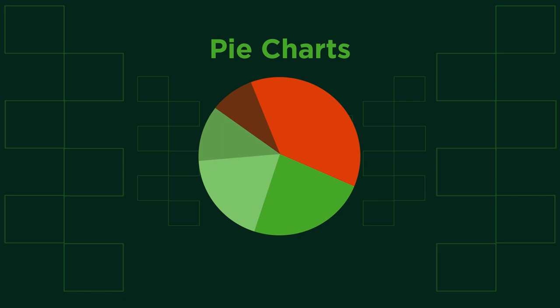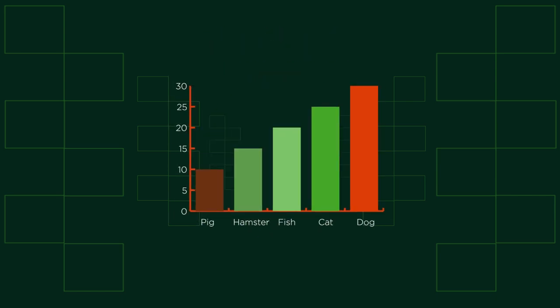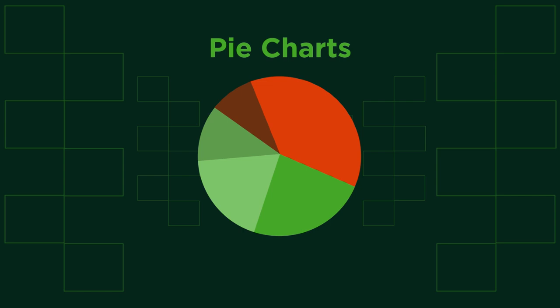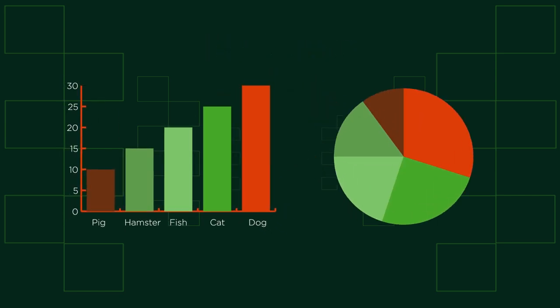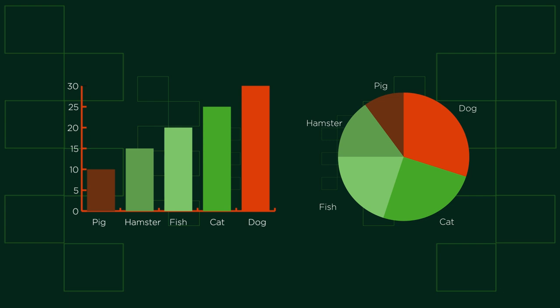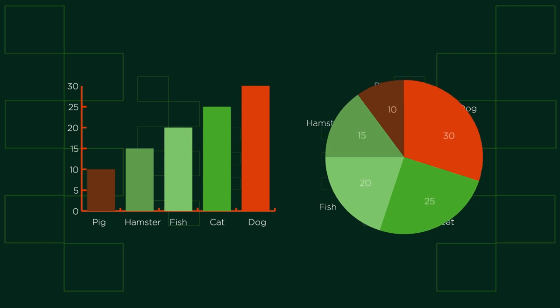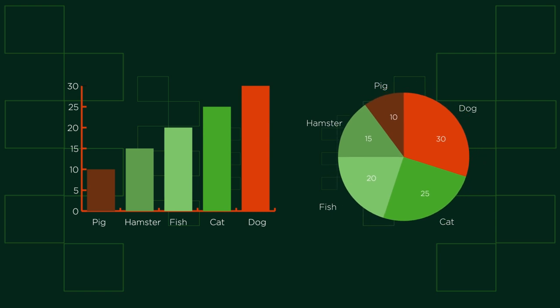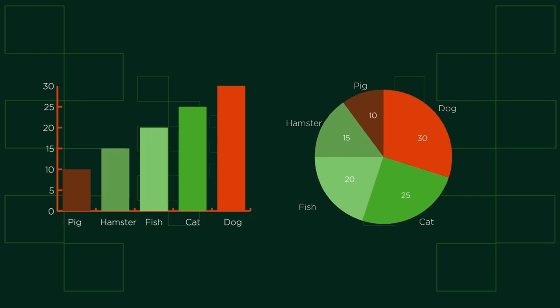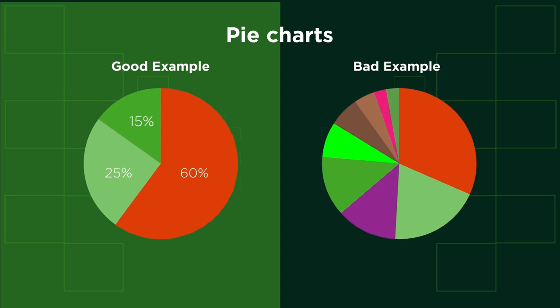Sadly for pie charts, they come under fire from data experts who think they are inferior to bar graphs. They argue that pie charts are only suitable in rare circumstances, like here. We've used the same data set for both charts, but in the pie chart it's very hard to see any difference. Pie charts are only good for showing distributions if there are clear differences between each category.